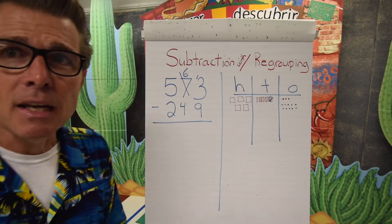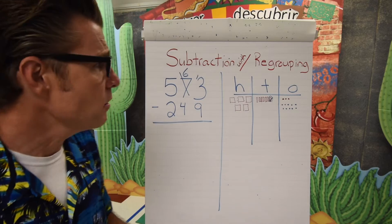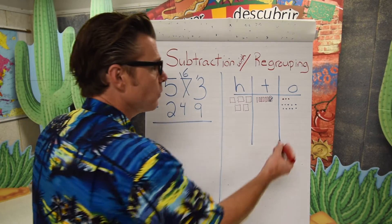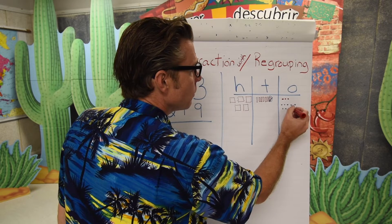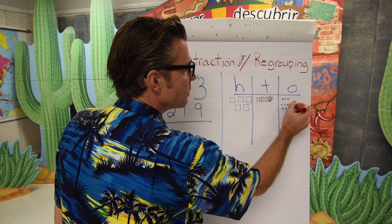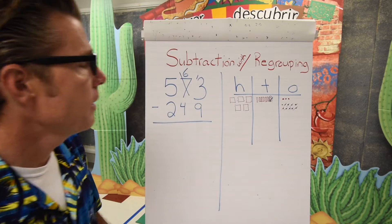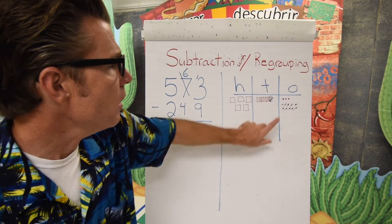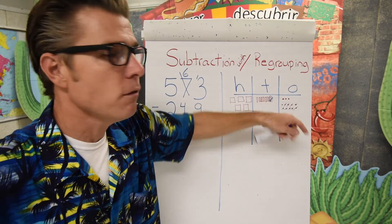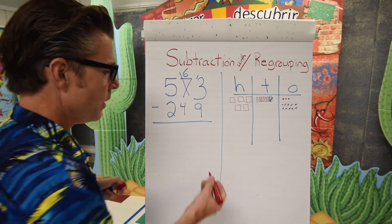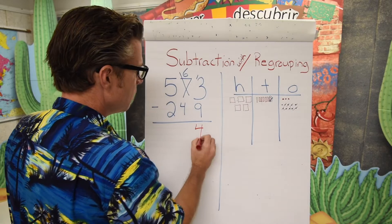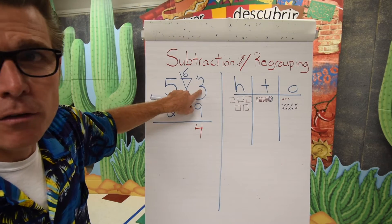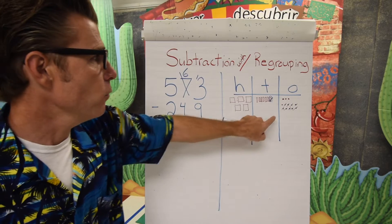Now if we have thirteen and we're trying to take nine away, that is possible. So we mark out nine of the ones — one through nine. When we take nine away from the ones column, we're left with four. The difference of thirteen minus nine is four, so we put four in the ones place.